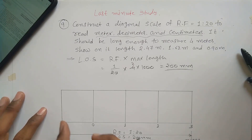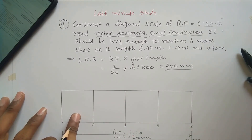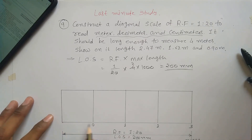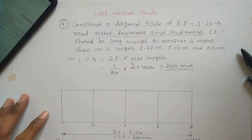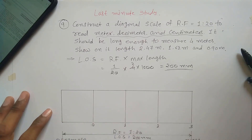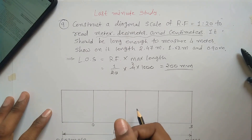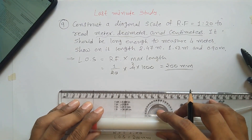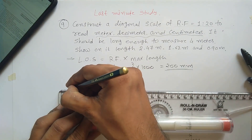If this were a plane scale, you would divide this extra part into 10 equal parts, representing decimeters, because a tenth of one meter is a decimeter. Write decimeter here in capital letters. However, in the diagonal method, you cannot directly divide this into 10 equal parts. Instead, you divide the above and below portions into 10 equal parts.